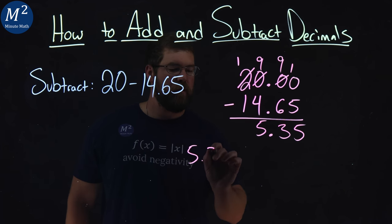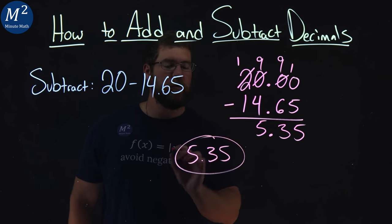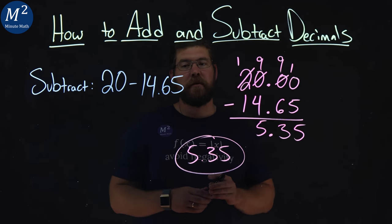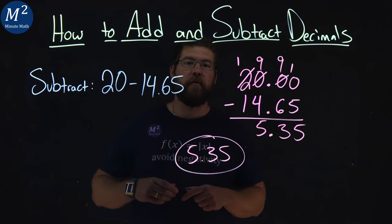And so, 5.35 is what is left over. That is when we have 20 minus 14.65, we get 5.35.